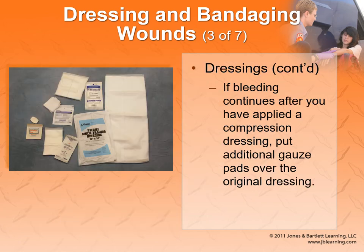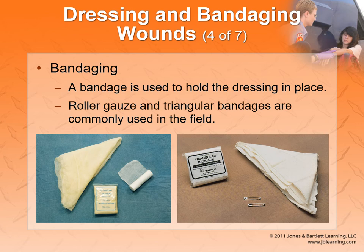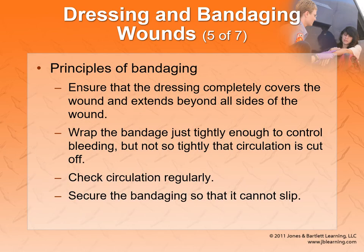There are dressings from Band-Aids to 2x2s, 4x4s, and larger abdominal pads. For bandaging, you can use roller gauze, triangular bandages, or tape. Make sure the dressing covers the entire wound and extends beyond the sides. We want to check circulation after bandaging because if someone gets tunnel vision and tightens the bandage too much, they can create a tourniquet-like effect. If we put a bandage on the arm, go down to the hands and check pulses and capillary refill to make sure there's still blood flow. With a tourniquet, there will intentionally be no blood flow — but for regular bandages, we still want distal circulation.